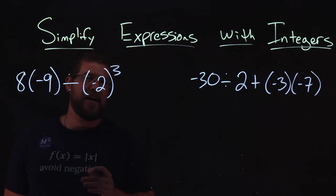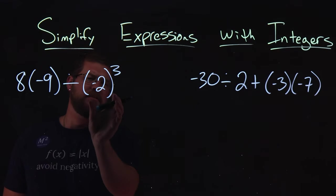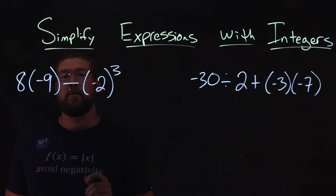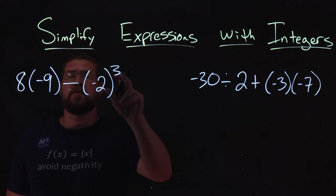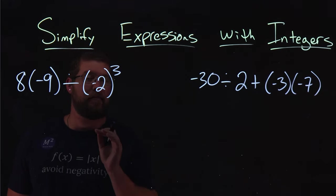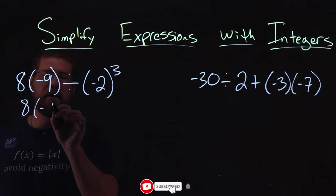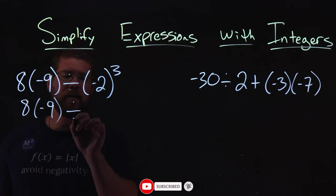Order of operations has parentheses first, but our negative two is just by itself, so now we move to the exponents. Negative two to the third power is our first operation that we have to do. So the eight times the negative nine comes down, divided by here,